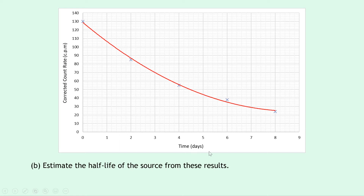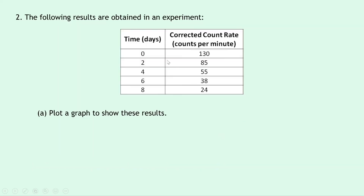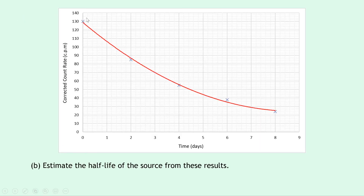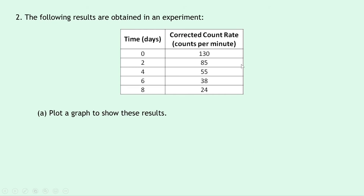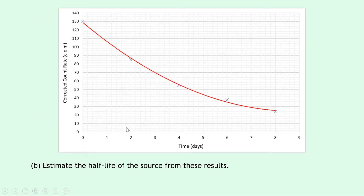On the x-axis we've got time in days. On the y-axis I've gone up in tens, and on the x-axis up in ones in terms of days. You would then plot your points — for the first point we've got (0, 130), the second point is (2, 85), and so on. Then you plot your curve of best fit. I've used Excel here, but if you're doing it freehand with pencil and graph paper, try to fit the curve to the points as best you can.